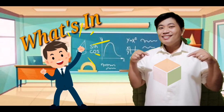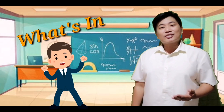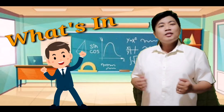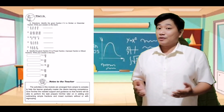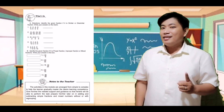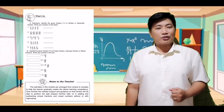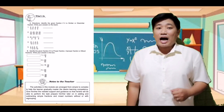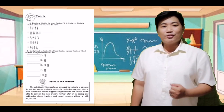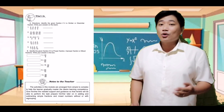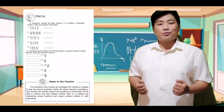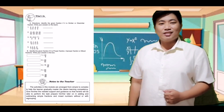What's In? To help you link the current lesson from the previous one, open your module on page 4 for a brief review. For letter A, add and subtract the following fractions. After answering, proceed to the activity on letter B. Solve the following problem. Write your answer on the provided answer sheet.